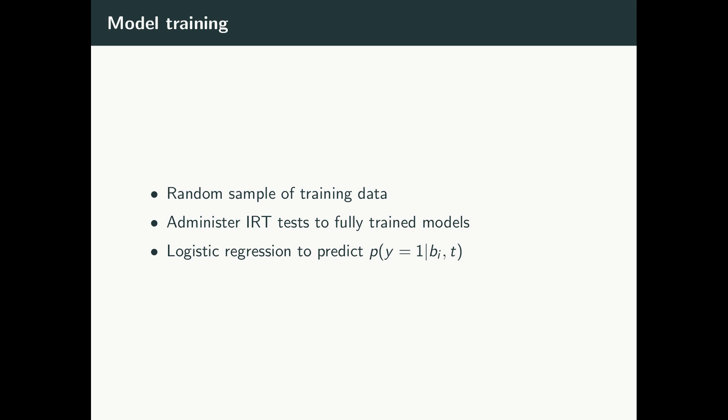To conduct our experiment, we trained each model with a subset of training data for each task. We started with a few hundred training examples and incrementally added randomly sampled training data until the models were trained with the entire training set. For each training set size, once the model was trained, we administered our IRT tests and recorded the model output for each item. With these outputs, we learned a logistic regression model to predict whether a model would correctly label an item, given the training set size and the item difficulty.